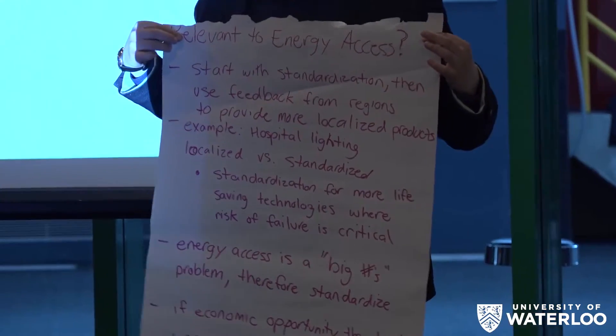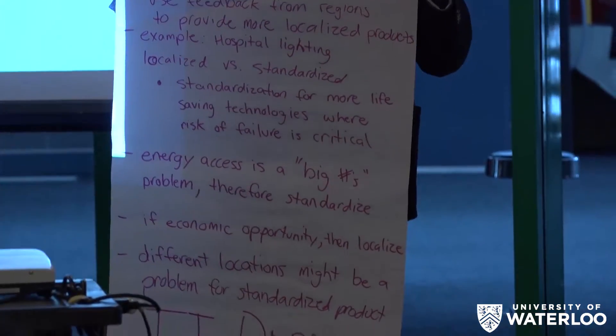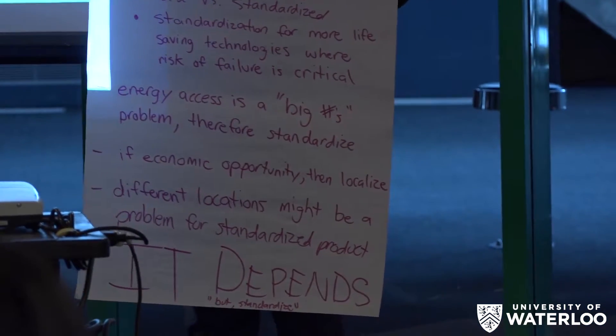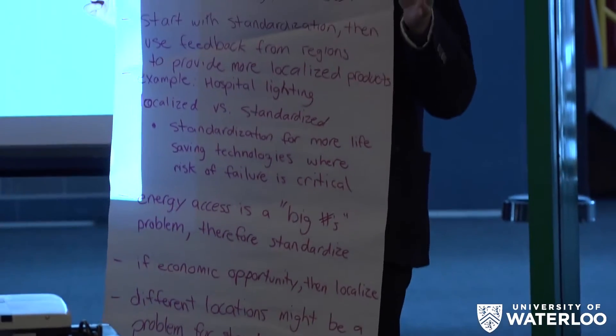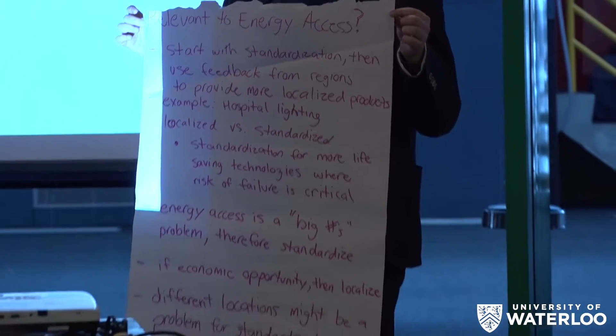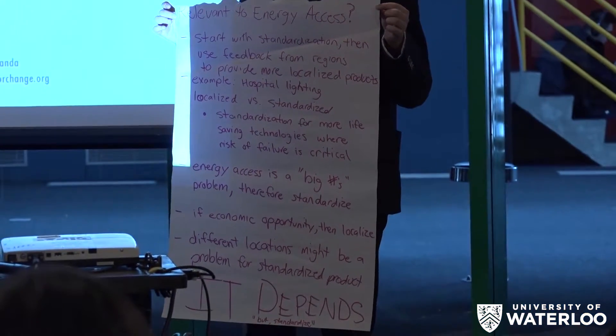We were talking about whether products should be standardized or localized. At the beginning of the conversation there was an early indication that having a feedback loop is really important. We talked about how pushing out a standardized product is appropriate because you can get it out there, but then you have to have the feedback loop to see if that standardized product met local needs.